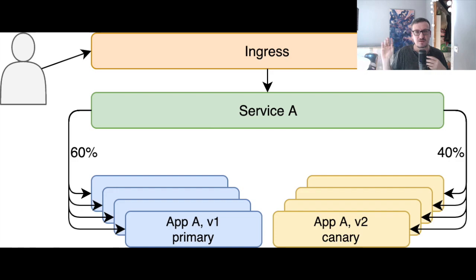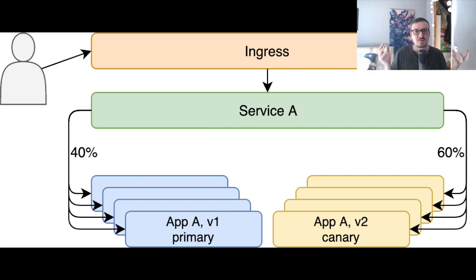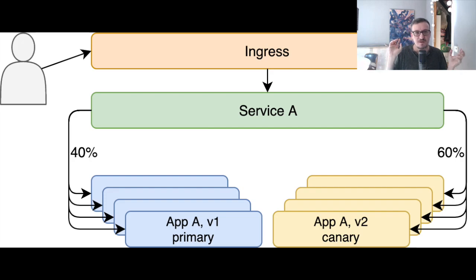40% to Canary, 60% to primary. Then 60% to Canary and 40% to primary. At one moment, we might say that is enough — we don't need to continue iterating until we reach 100% of the traffic being sent to the Canary release. We can say 60% is enough.